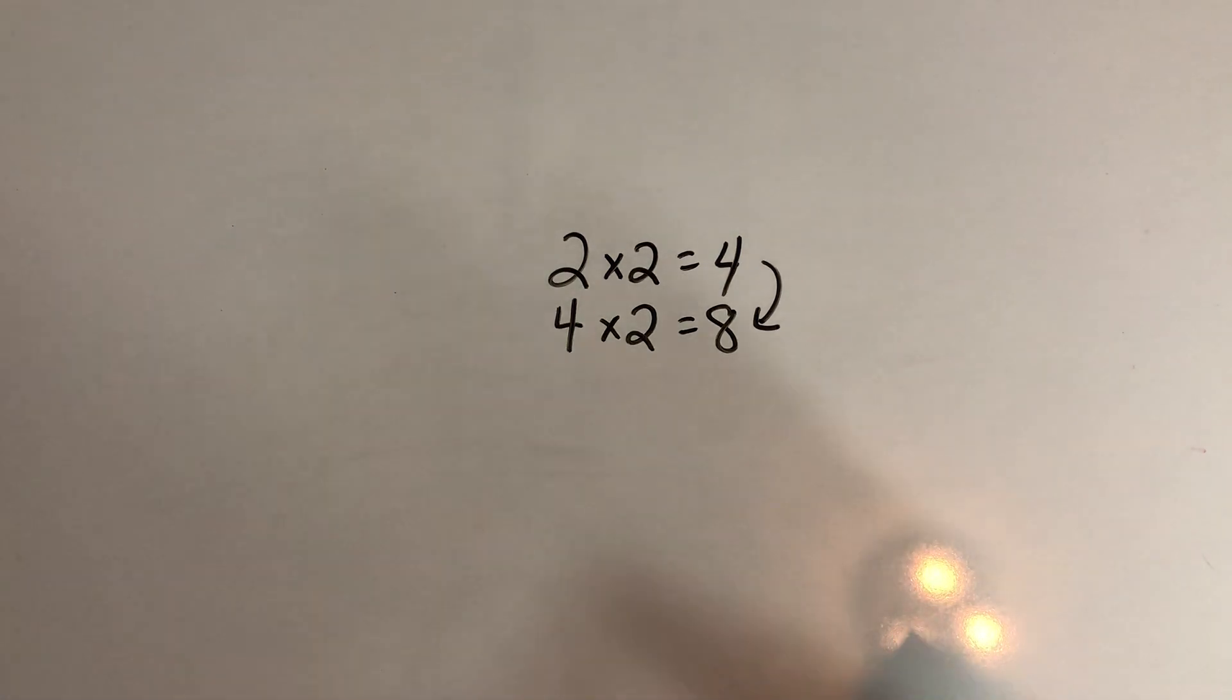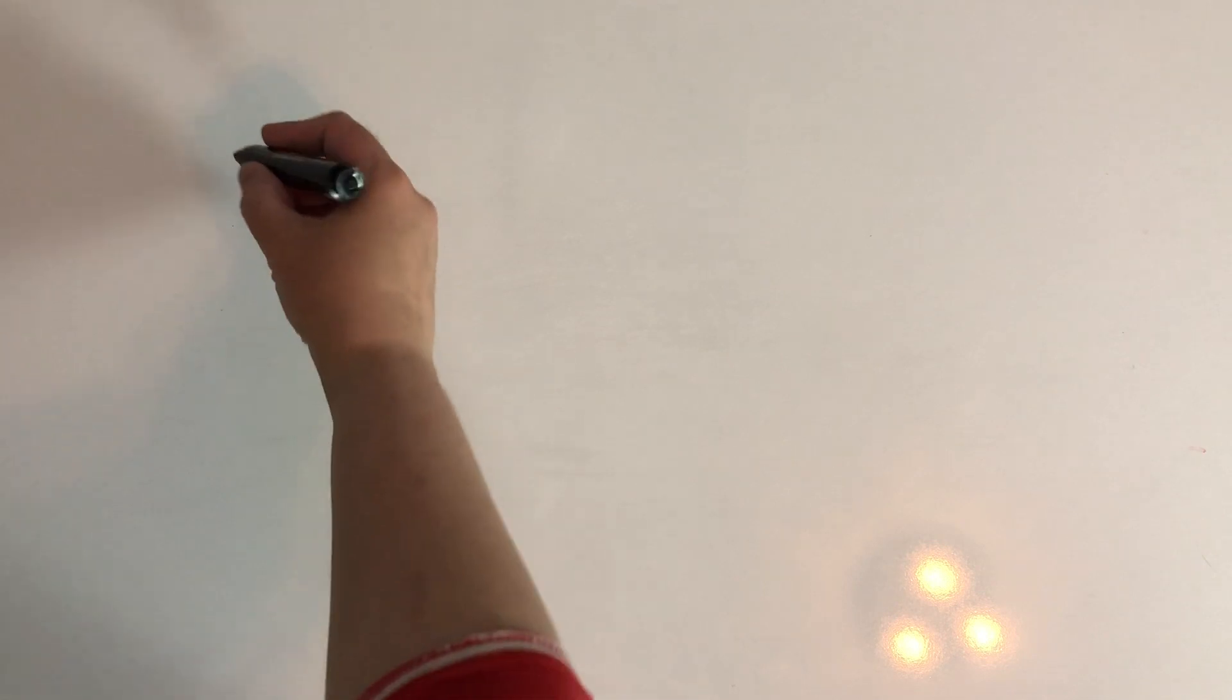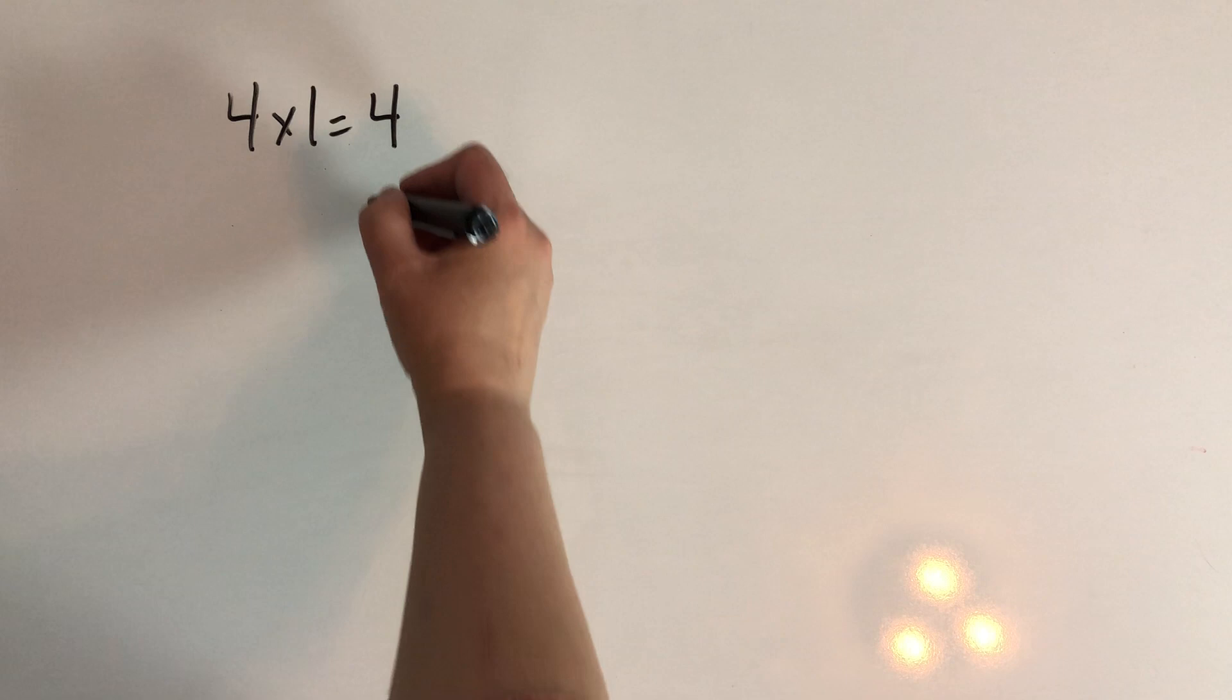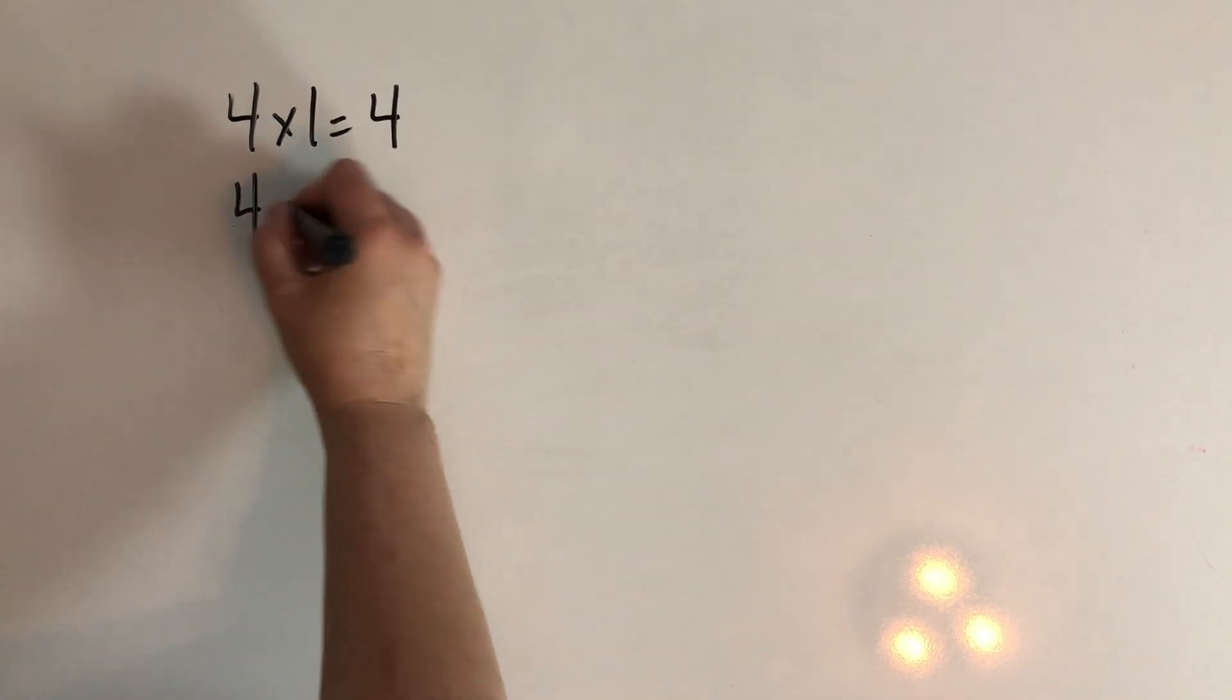So let's go through the fours facts together and we'll use this strategy as we go. We'll start with four times one. Now we know that anything times one is itself, so we know that's four. And four times two.